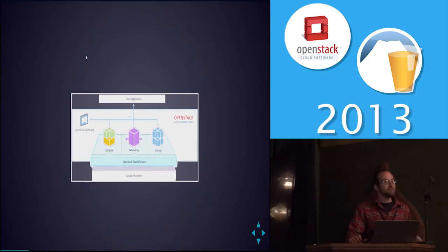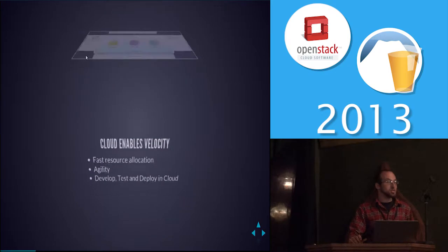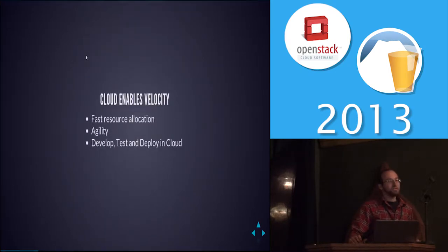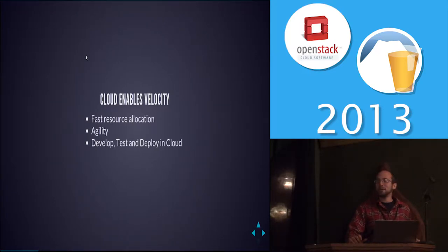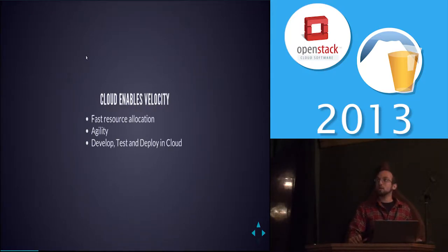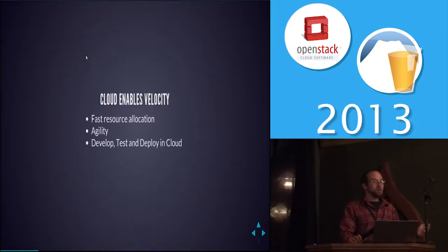The split-brain problem is where developers are working on the next-generation OpenStack while your production guys are running something six months to a year old. They ask about a bug you probably wrote and you don't know what it does because that was six months ago. We solve that by actually deploying trunk all the time — continuous delivery. Instead of thinking back to what you did six months ago, it's what you did two days ago, it's fresh in your memory and you can fix it quicker.